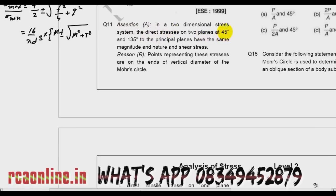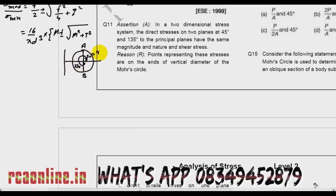Question number 11: In a two-dimensional stress system, the direct stresses on two planes at 45° and 135° to the principal plane have the same magnitude and nature and shear stress, and the reason is that the points representing these stresses are on the ends of the vertical diameter of the Mohr circle. If this is the Mohr circle, then OA and OB are the two planes — this angle is 90° and this is 270° on the Mohr circle, but actually the angles are 45° and 135°, because the Mohr circle angle is double the actual angle.